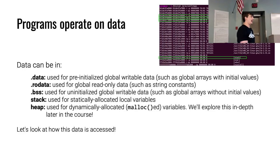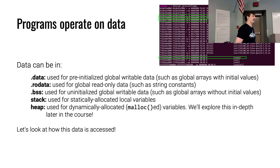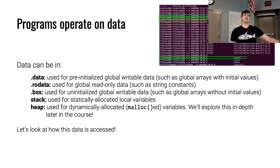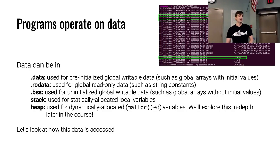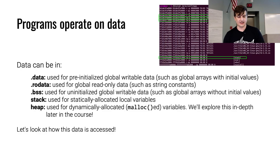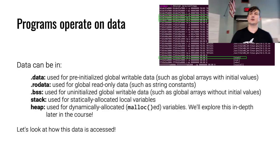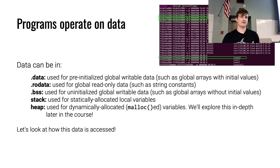Programs need to operate on data — we need something to compute on. In the reverse engineering challenges they have data of what they expect after they do all the mangling with your input, and your goal is to figure out what input gets it to the correct state where it passes that check. Data can be in many places: dot data for global arrays, dot RO data for read-only data, BSS for uninitialized data.